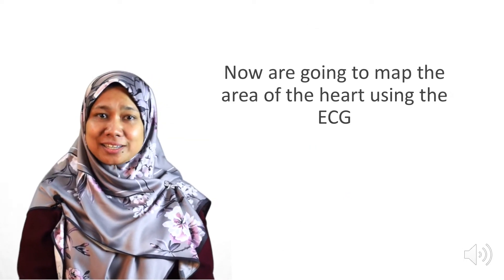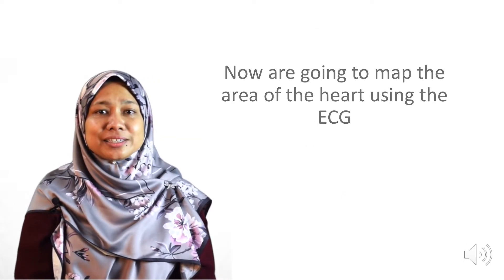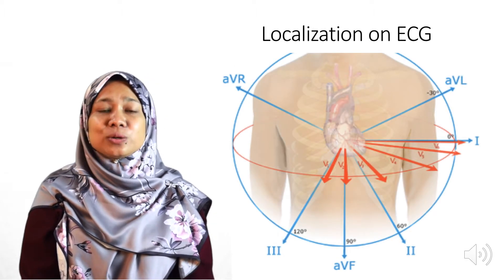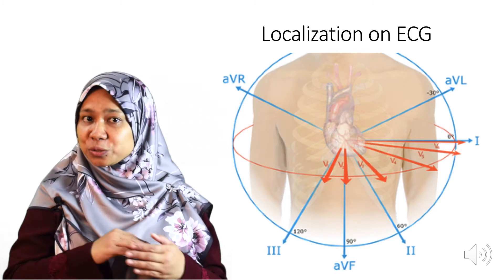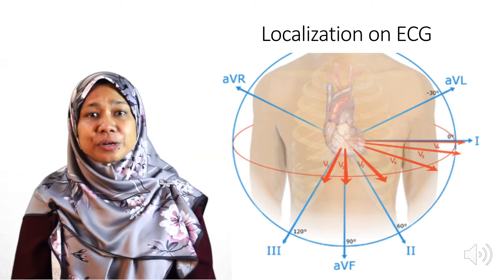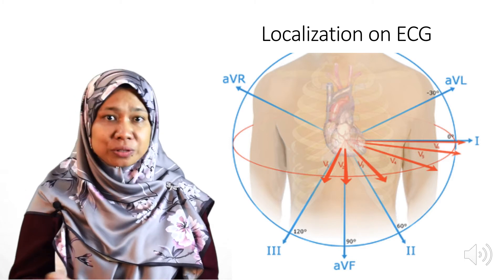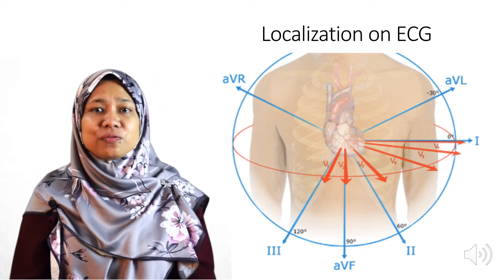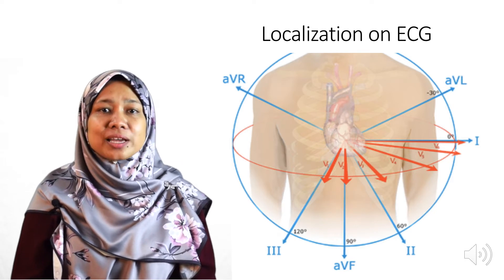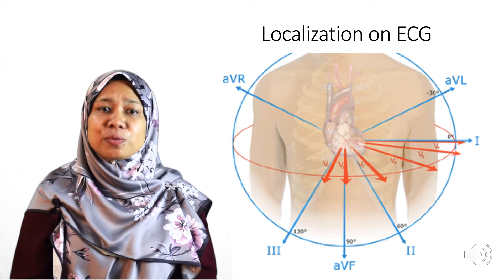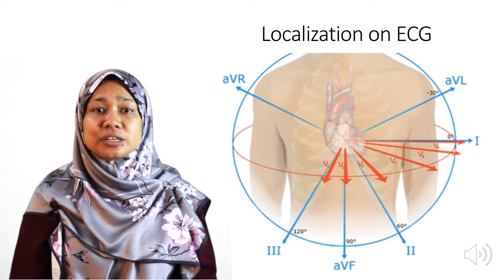Now we are going to map the area of the heart using the ECG. The limb leads look at the vertical plane, while the chest leads look at the transverse or horizontal plane. Leads 2, 3, and AVF look at the inferior part of the heart. Lead 1, AVL, V5, and V6 look at the apex and the lateral wall of the left ventricle. Leads V1 to V4 look at the anterior part of the heart.